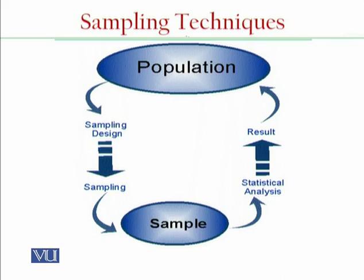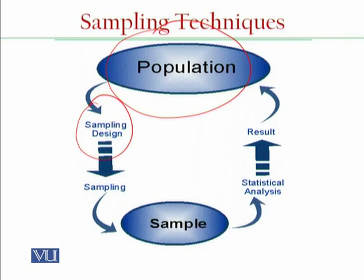We have a population, as you can see here. First we need to explore the nature of the population — what kind of nature it has. Based on that nature, we decide what our sampling design will be. In the sampling design, we look at our selection procedure, what resources we have and how we can utilize them, our cost, our time, how much sample size we need, and in what manner we need to obtain the sample from the population. All these things are gathered in the sampling design.